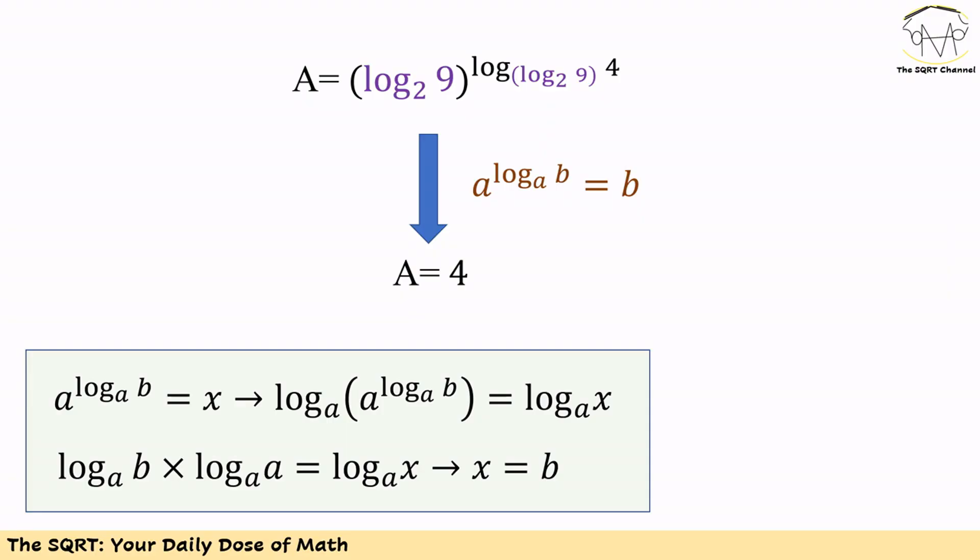To understand why A to the power of log B in base A is equal to B, consider the following. Let A to the power of log B in base A equal X. Taking log in base A from both sides, the left-hand side becomes log B in base A times log A in base A. The right-hand side is log X in base A. Since log A in base A equals 1, we get log B in base A equals log X in base A, therefore B equals X.